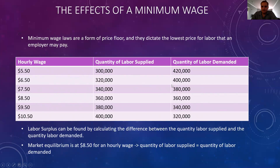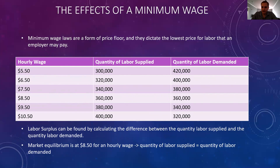A couple key things to notice here. As the hourly wage increases, we will see an increase in the quantity of labor supplied, and that is because as the wages increase, more people will enter into that labor market seeking higher wages. And you'll see an opposite trend with quantity of labor demanded, for a similar reason — firms are willing to employ more individuals if wages are lower.